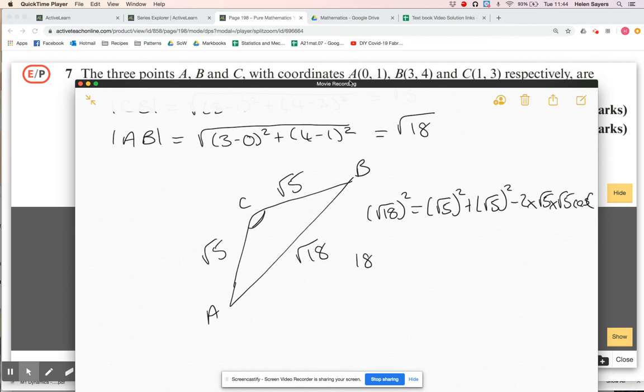So root 18 all squared is just 18, root five squared is just five, so there I've got five plus five, root five times root five is five, so that's going to be minus 10 cos C. So I add that over to the left hand side, 10 cos C is minus eight.